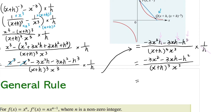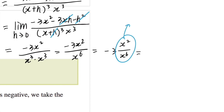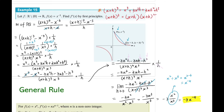To find the gradient of the curve at P, we take the limit of this expression as h approaches zero. When h goes to zero, the terms with h disappear, and we're left with negative three x squared over x cubed times x cubed. That gives negative three x squared over x to the power of six. By index law this equals negative three times x to the power of two minus six, which is negative three x to the power of negative four. So the derivative function f prime of x equals negative three x to the power of negative four.